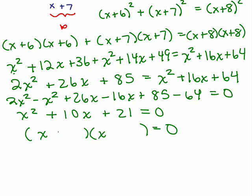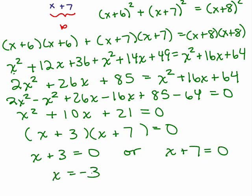So we have x and x and 3 and 7 so we have (x+3) equals 0 or (x+7) equals 0 so x is negative 3 or x is negative 7.